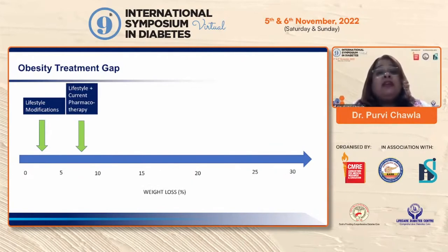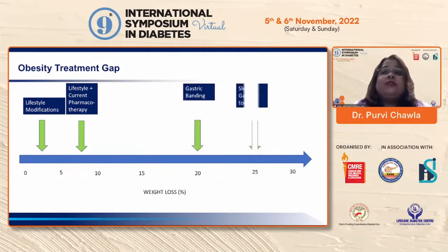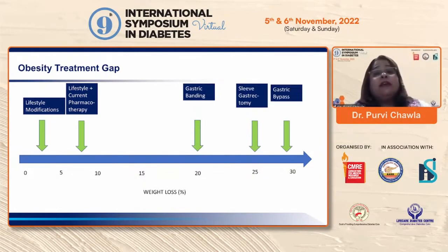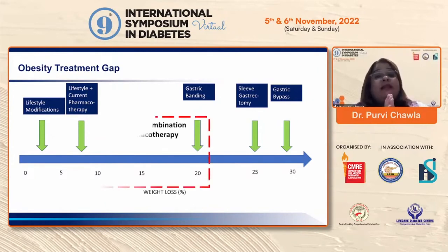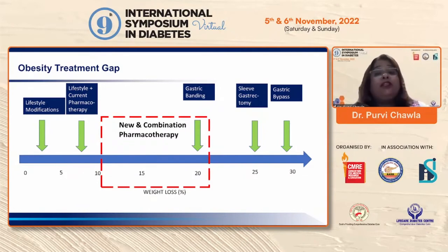Until recently there were gaps in obesity treatment. Lifestyle modifications, as sustainable as they may be, help achieve minimal weight loss. Adding drug therapy can achieve up to 10 percent. Surgical procedures were the only ones available to achieve 20 to 30 percent weight loss. But we are now in an extremely exciting era, with new combination pharmacotherapy that has already been proven to help us achieve up to 20 percent weight loss.